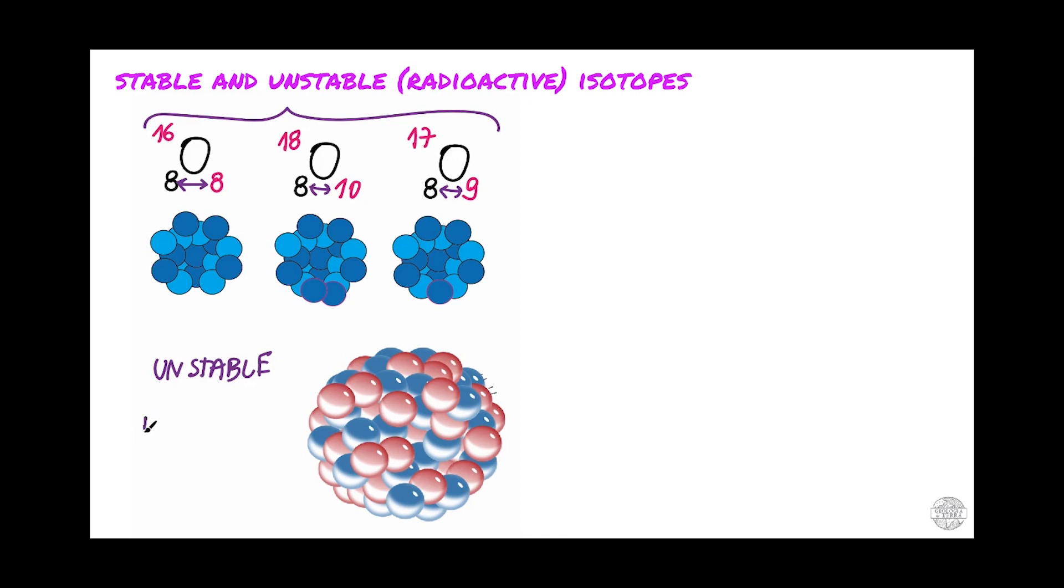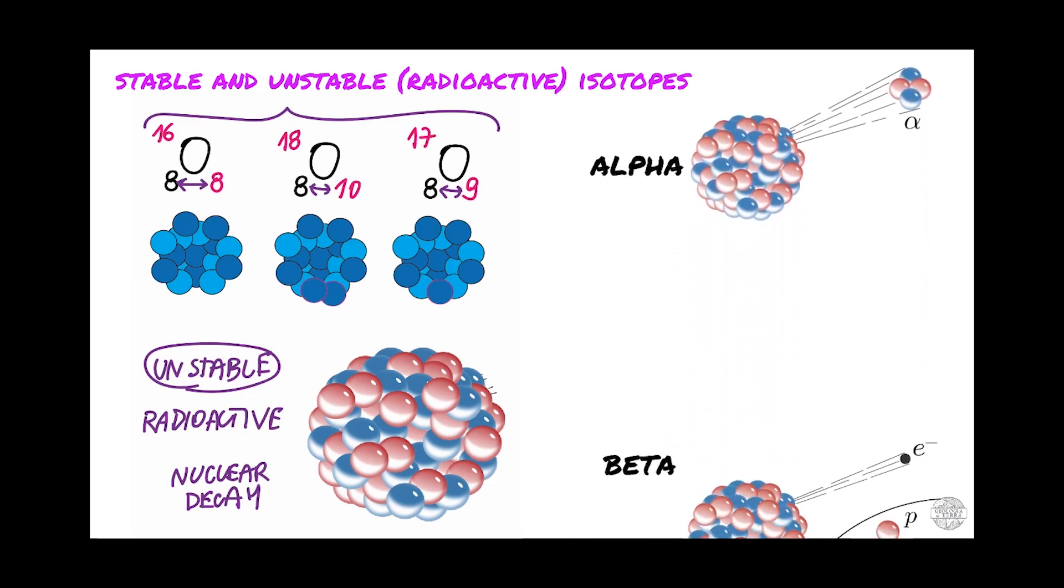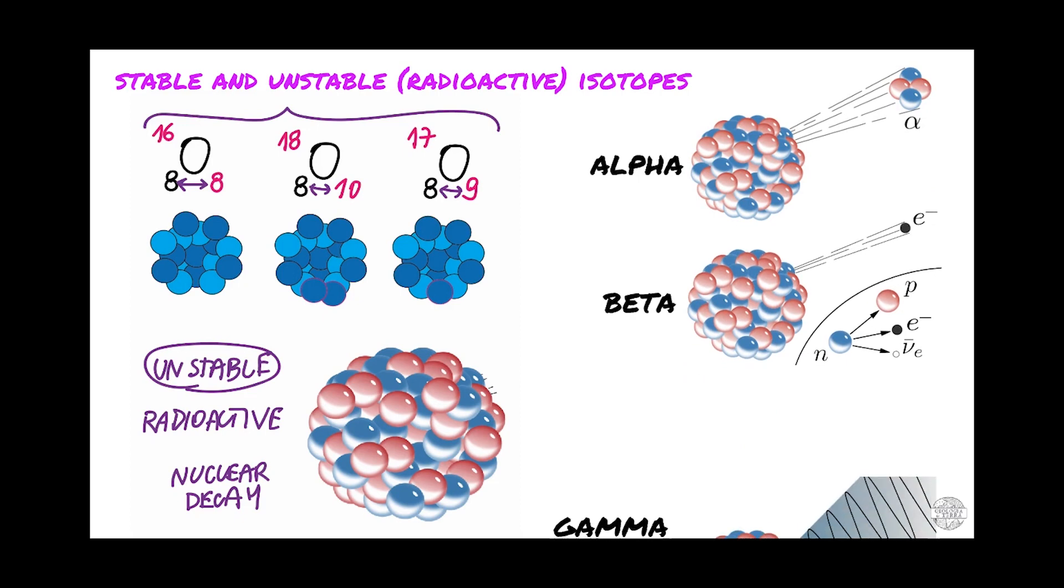Unstable isotopes are called radioactive nuclides, and they have a certain probability of nuclear decay. The three main ways this happens is by the emission of alpha particles, beta particles, and gamma radiation. We will not get much into that.